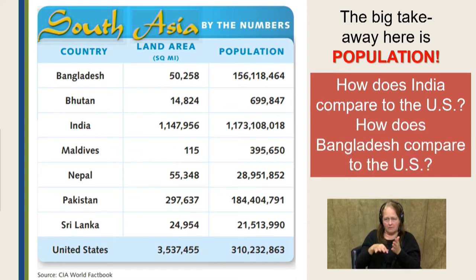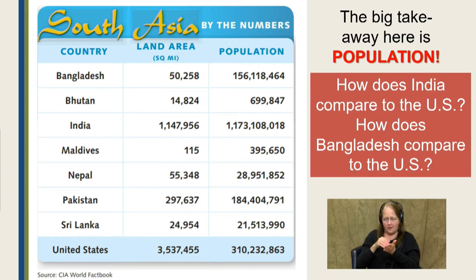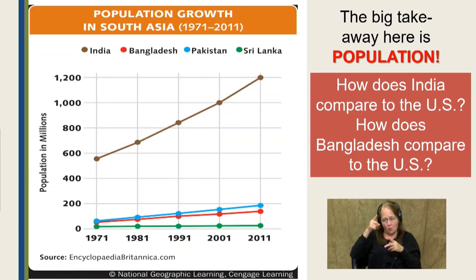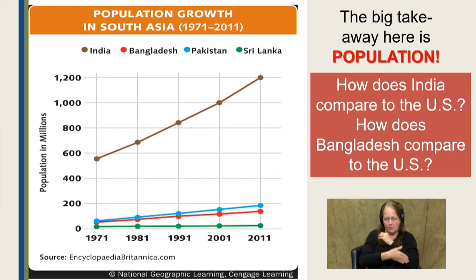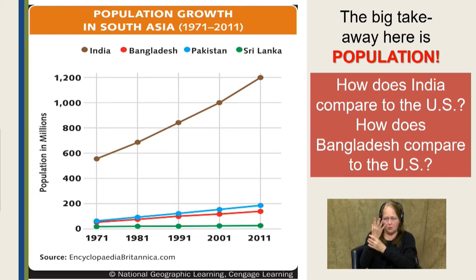Looking at Bangladesh: its land area is about 50,000 square miles — roughly one-seventh the size of the United States — but its population is about one-half of the United States. India's population growth is very high compared to its neighbors, and it is outpacing China to become the world's most populated country in a few years.